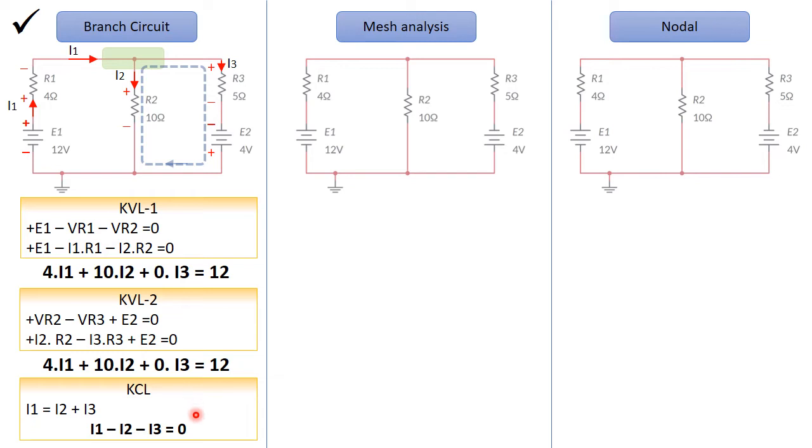Solving these three equations together, using determinants, or substitution, or any other methods, we can find the currents I1, I2, and I3. Now, the second method here, which is the mesh analysis.